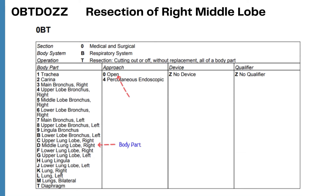The first code is for resection of the right middle lobe: 0BTD0ZZ. The section is Medical and Surgical, body system is Respiratory System, and the root operation is Resection since the complete lobe of the right lung was removed — lobes have their own body part value. The body part is Middle Lobe of Right Lung, the approach is Open, the sixth character is No Device, and the seventh character is No Qualifier.